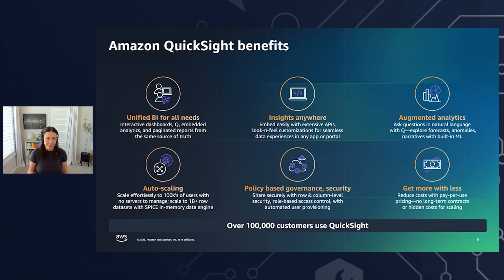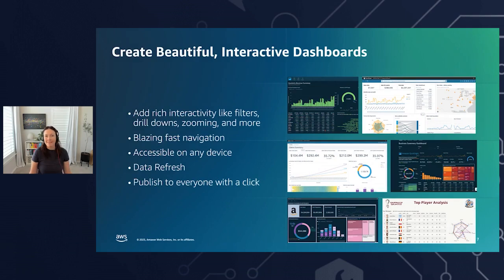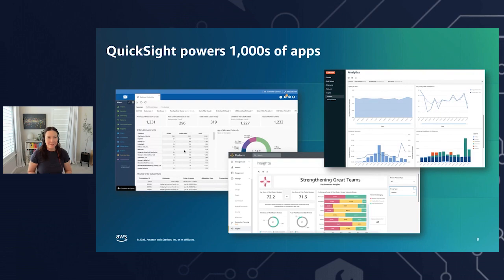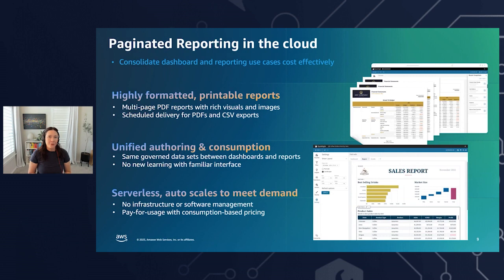So what can Amazon QuickSight do? A lot of different things. Probably the thing everyone knows BI for — dashboards. In QuickSight, you can create beautiful interactive dashboards where you can filter, zoom, and dive in to learn more. They're also really easy to go from development into production. Thousands of customers customize applications to fit their needs, making it feel like an all-in-one experience, or you can just embed the pieces you need. QuickSight also allows you to create paginated reports.